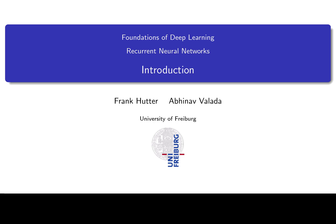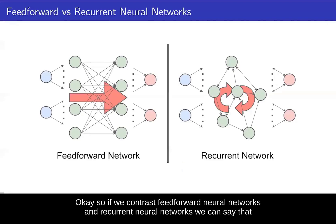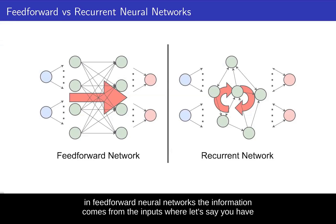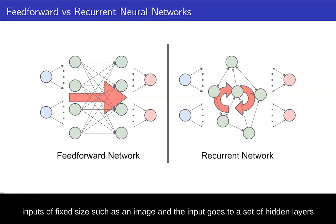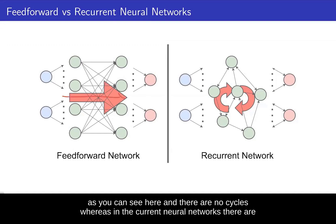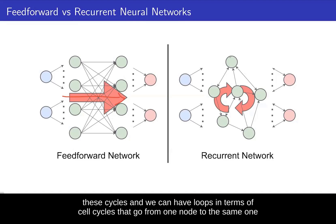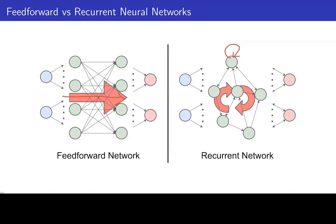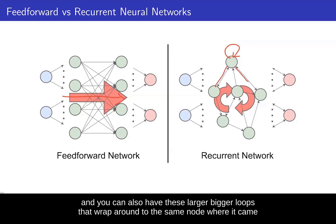If we contrast feedforward neural networks and recurrent neural networks, we can say that in feedforward neural networks the information comes from inputs of fixed size, such as an image, and the input goes to a set of hidden layers and produces a single output. So the information flow is only in one direction and there are no cycles. Whereas in recurrent neural networks, there are cycles and we can have loops that go from one node to the same one, and also larger loops that wrap around to the same node.